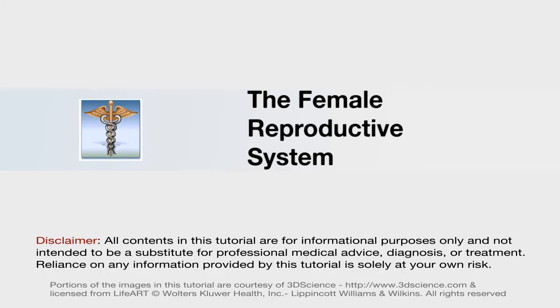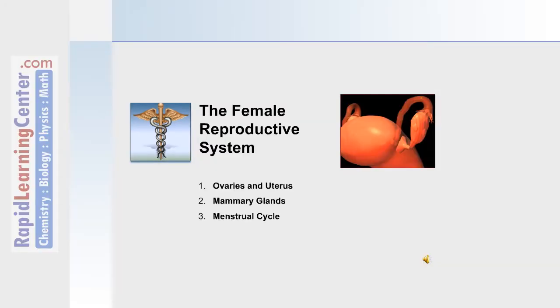Now let's move on to discuss the female reproductive system, including the ovaries and uterus, the mammary glands, and the menstrual cycle.